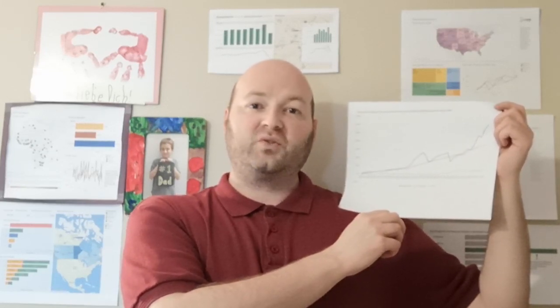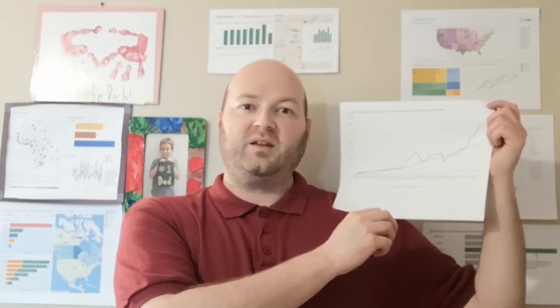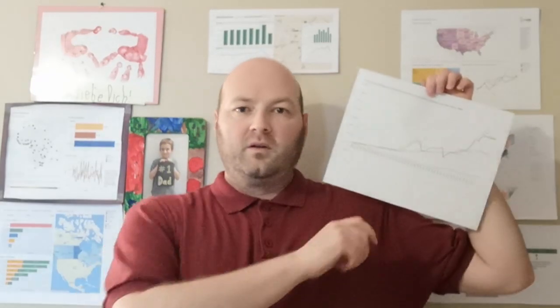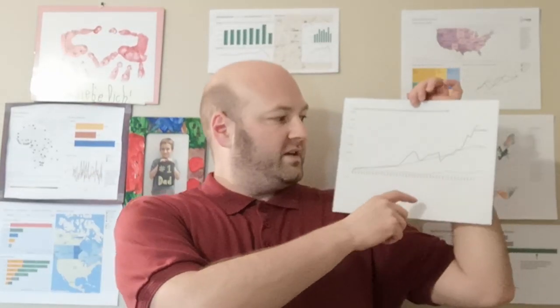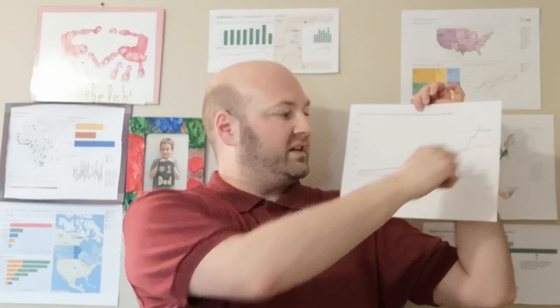According to data visualization theory, instead, you should put the labels beside the data you're wanting them to represent. So now in this chart, all the label names are right beside the data they represent.